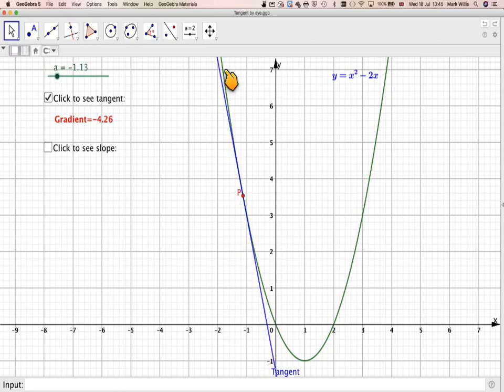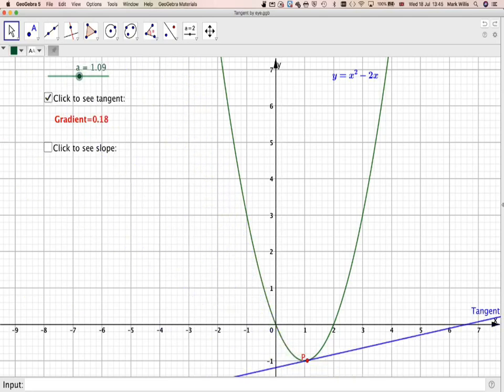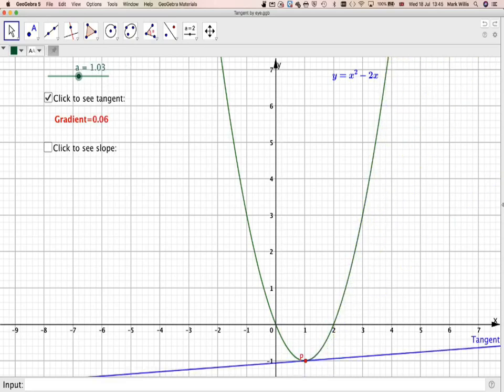Now the blue line is called a tangent to the curve. And the tangent of the curve, you can see changes, the gradient of that changes throughout its domain of the curve. So wherever I move this along the curve, the tangent is going to change.